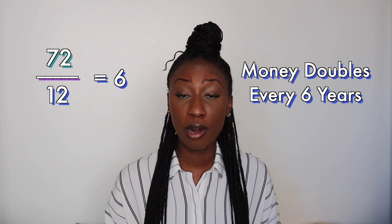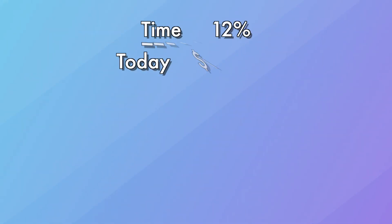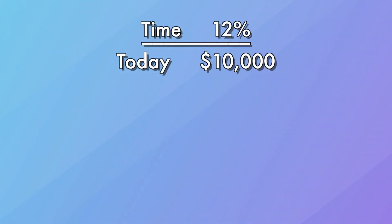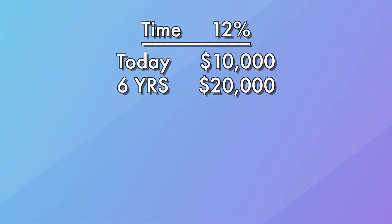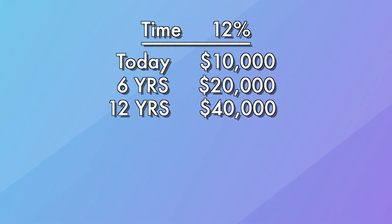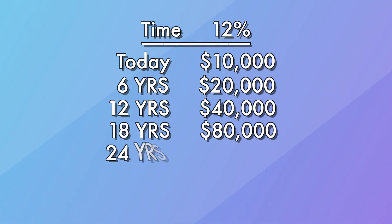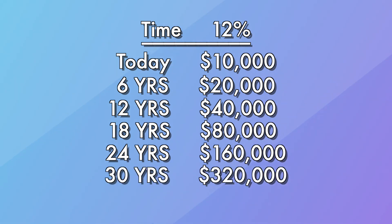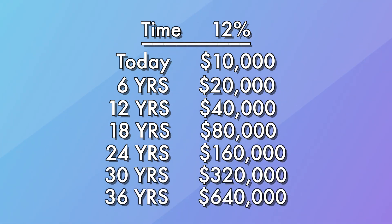For example, instead of having an account with a 4% rate of return, you had an account with a 12% rate of return. Using the rule of 72, we plug that into the equation: 72 divided by 12, and now our money is doubling every six years. So if we put that same $10,000 investment in a 12% rate of return account, within six years our money doubles to $20,000. Within 12 years, $40,000. 18 years, $80,000. 24 years, $160,000. Within 30 years, $320,000. And by 36 years, we will have $640,000.